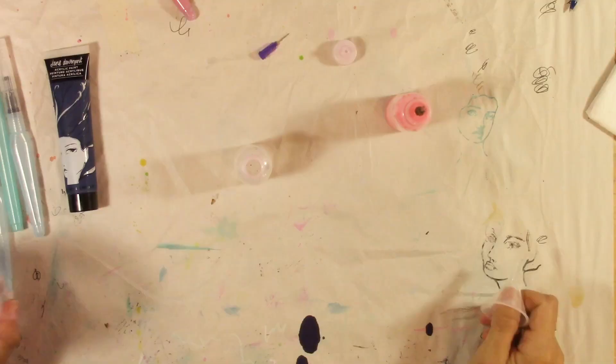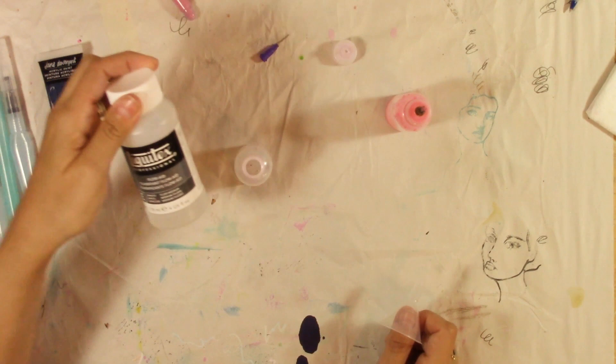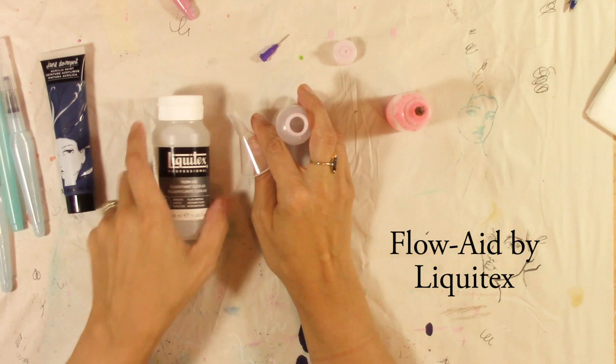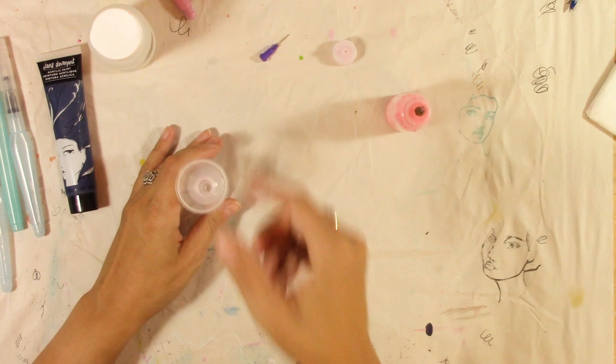So you're going to need some distilled water and you're going to need some flow aid from Liquitex. You can get this at Michael's or I'm sure lots of other hobby stores. You can also get it on Jane Davenport's site, she sells it.